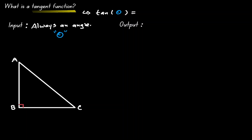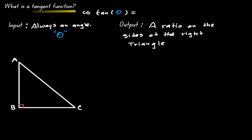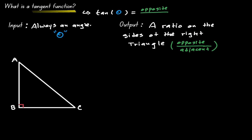The output is a ratio of the sides of the right triangle. The ratio is of the form opposite over adjacent. Whenever we look at the tangent function and plug in an angle, it's going to look into our right triangle, find the value of the opposite, and then divide it by the value of the adjacent. This is what we define as the tangent ratio.